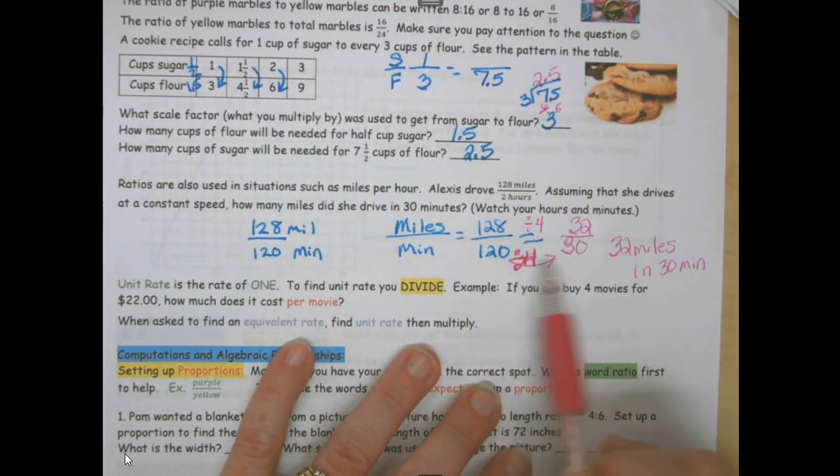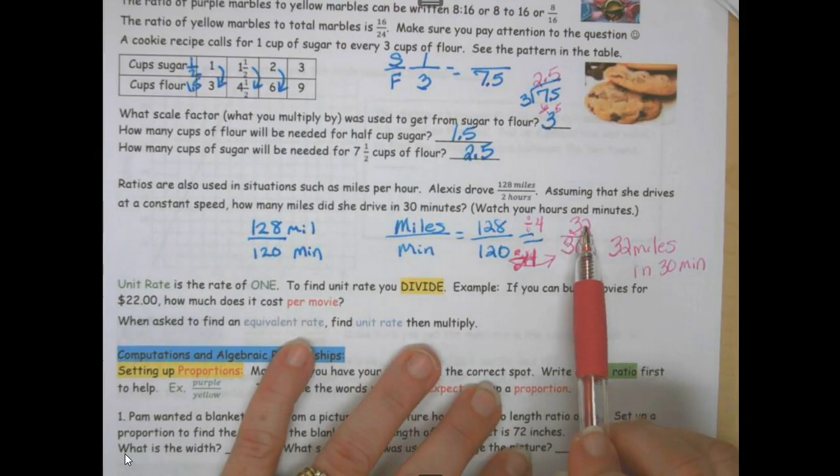120 divided by 4 is 30. 128 divided by 4 is 32. So she will go 32 miles in 30 minutes. I set up a proportion.